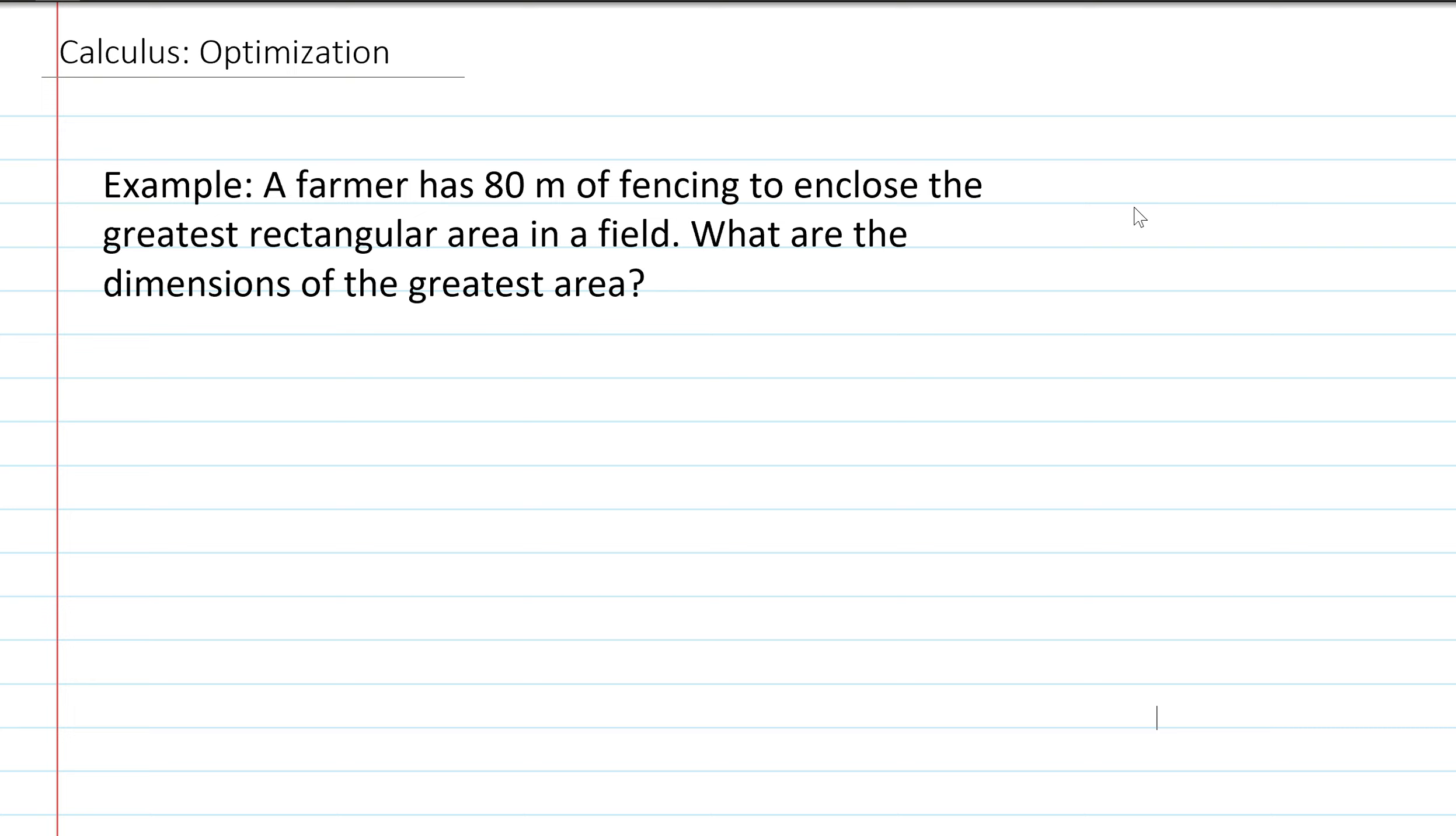If we look at our example, it says a farmer has 80 meters of fencing to enclose the greatest rectangular area in a field. What are the dimensions of the greatest area? He's trying to optimize his situation, maximize it to make sure he's using the greatest amount. Of course, he's a farmer, he wants to do that, right?